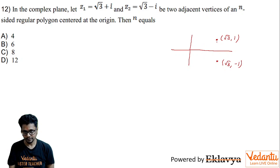So here, since these two are adjacent vertices, this will definitely be a side of the polygon. And if you see carefully, both these points are equidistant from origin.